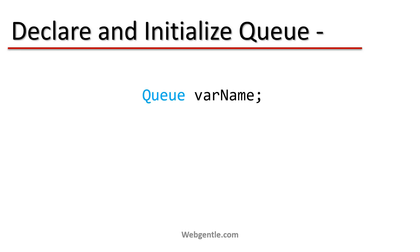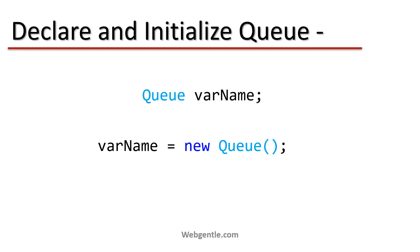To declare a Queue, we provide the type which is Queue and give it a name — write Queue, then the name of your variable, then a semicolon. To initialize a Queue we use the new keyword and call the constructor of the Queue class. There are multiple overloads of this constructor — we can use the parameterless one or other overridden versions based on our requirement.